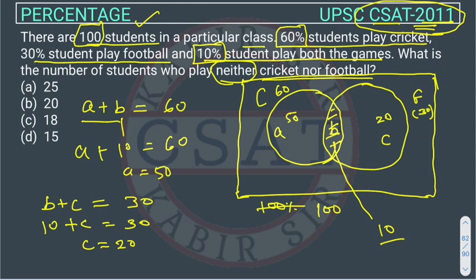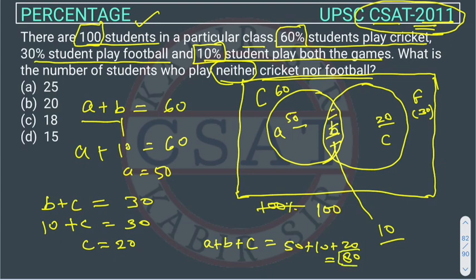The number of students playing either cricket or football — that is A plus B plus C — represents all students participating in games. So the total is 50 plus 10 plus 20, which equals 80 students playing games.